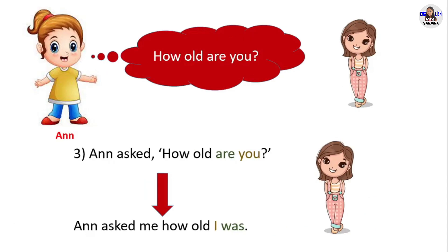Third example: 'How old are you?' Anne asked 'How old are you?' in direct speech. In reported speech, Anne asked me how old I was. 'How old are you?' in question form changes into 'how old I was' in statement form. Present simple changes to past simple. Pronoun 'you' changes to pronoun 'I.'